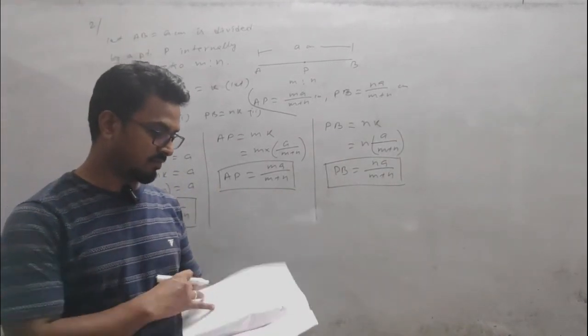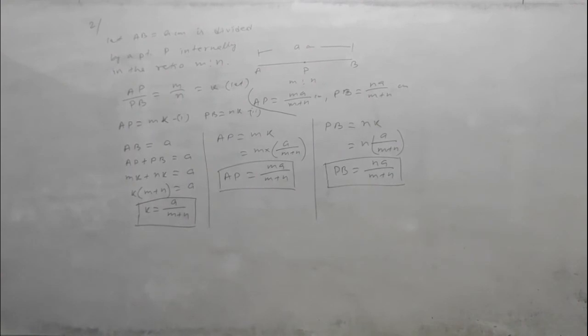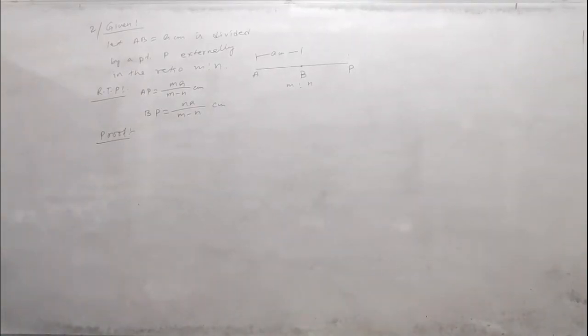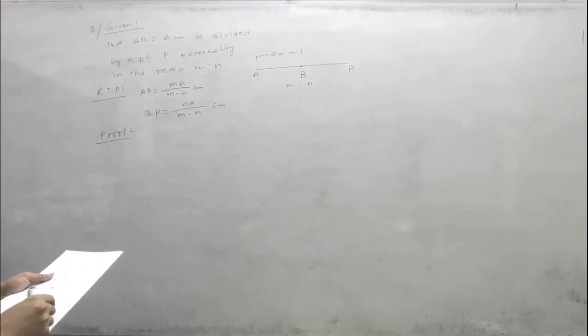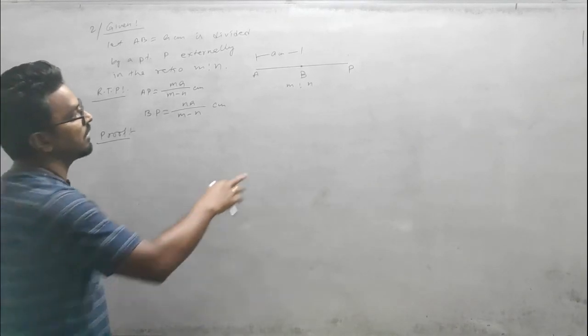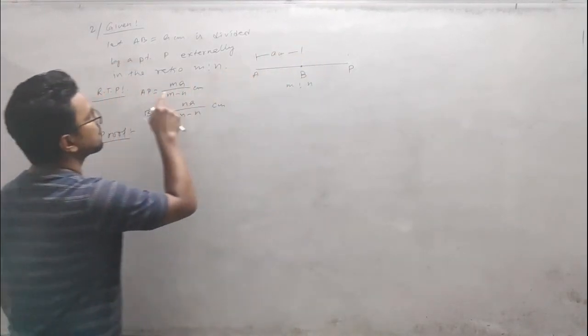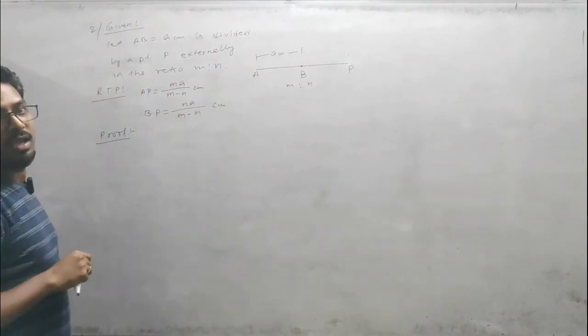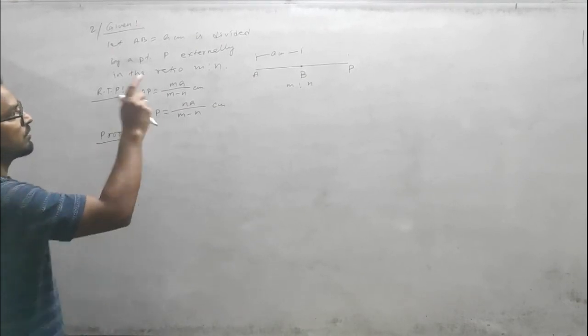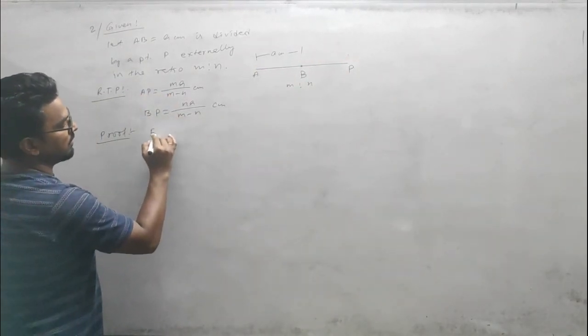Next is external division. For the next part, if the line segment AB is divided externally at the ratio m:n, we need to prove that AP = ma/(m-n) and BP = na/(m-n).